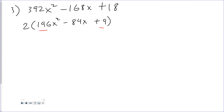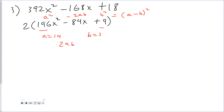Anytime your first term and last term are perfect squares, always check your middle term to see if it's a perfect square trinomial. Here, 196 is 14 squared so a is 14x, and 9 is 3 squared so b is 3. I want to check: is the middle term equal to 2ab? That would be 2 times 14x times 3, which equals 84x. Yes, it does equal the middle term.